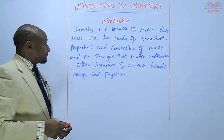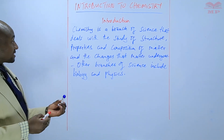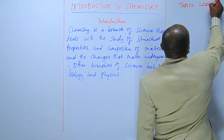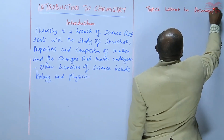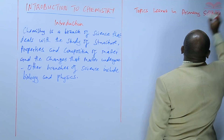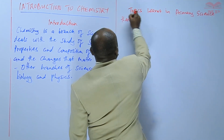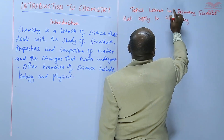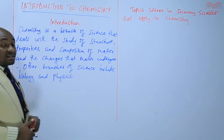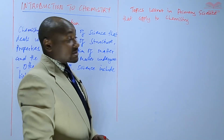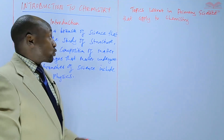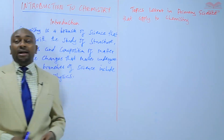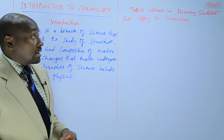Having understood that, it's also important to understand the topics learned in primary science that apply to chemistry. There are some topics that learners have come across in primary science, and those topics are also applicable here. Going through those topics helps us to understand chemistry as a branch of science better.